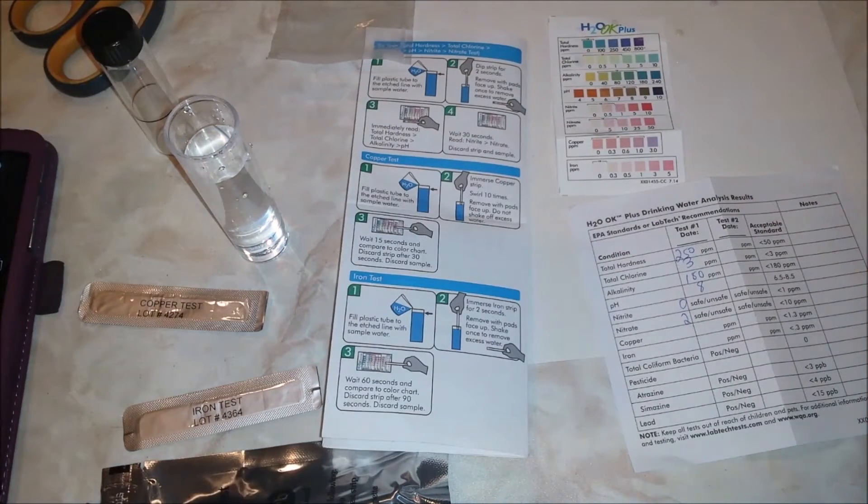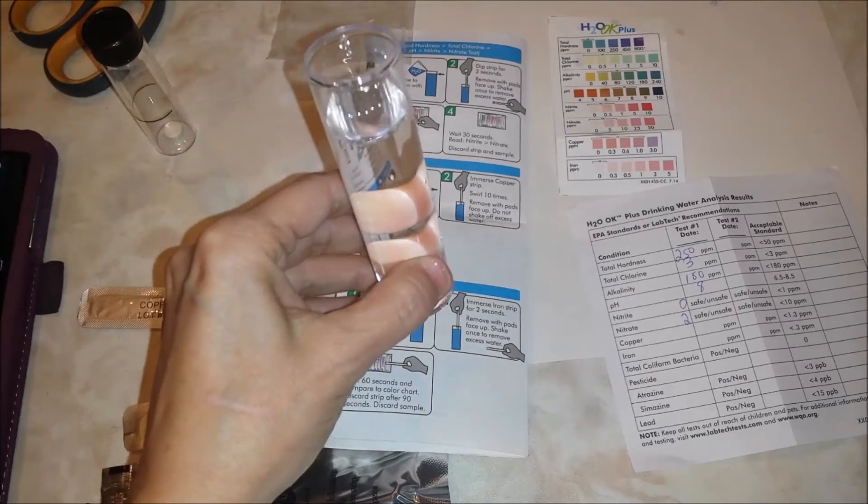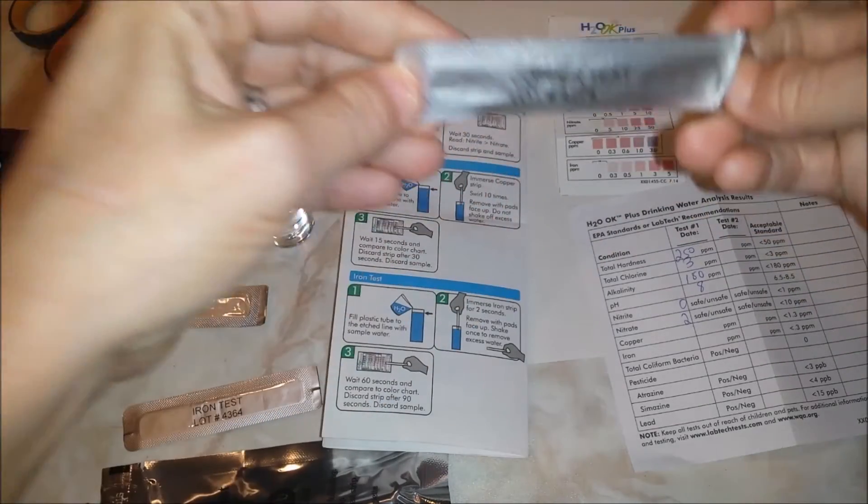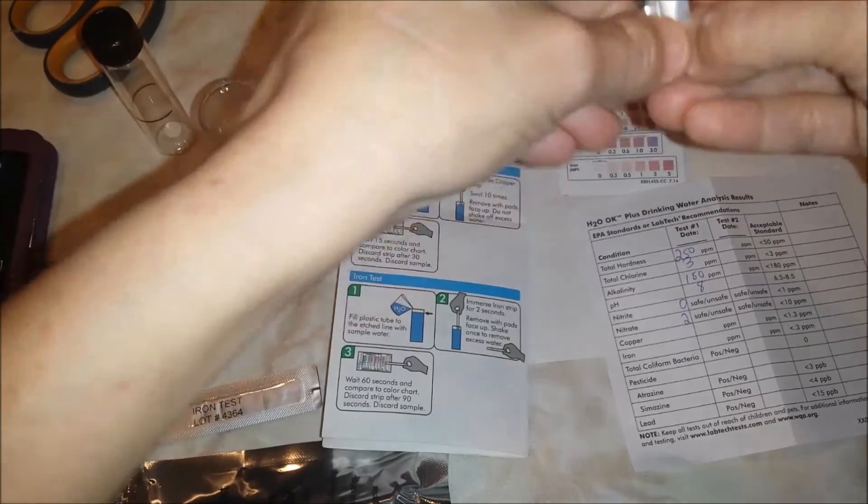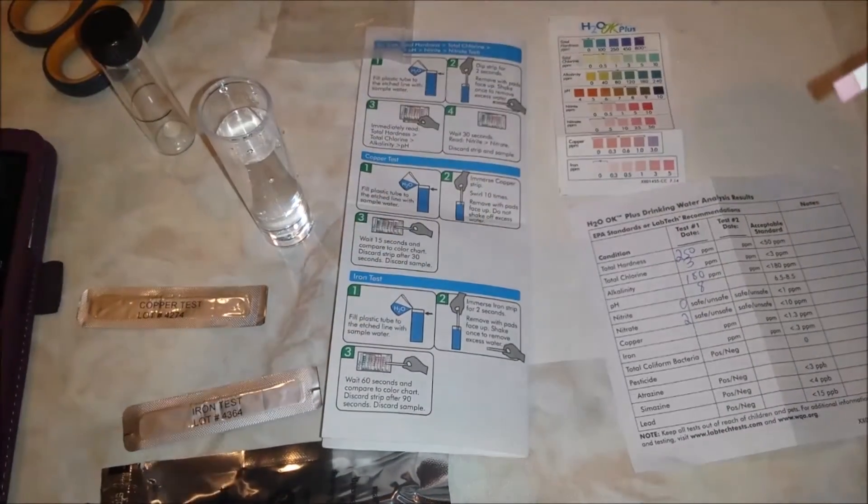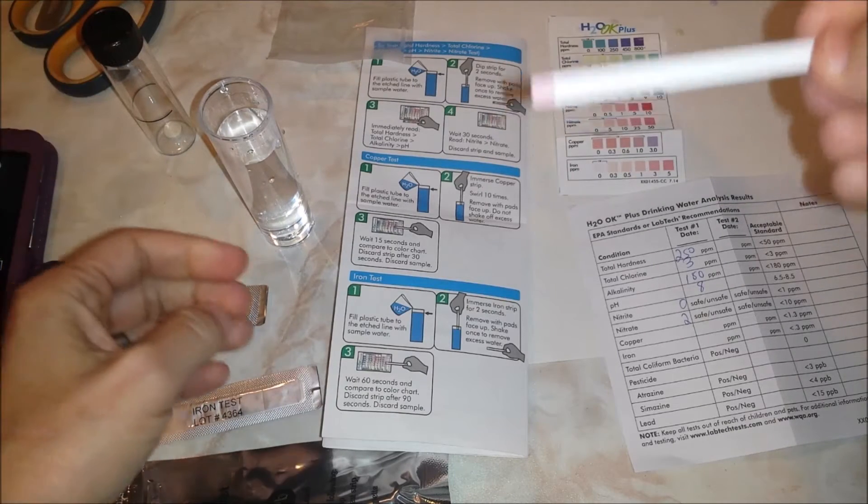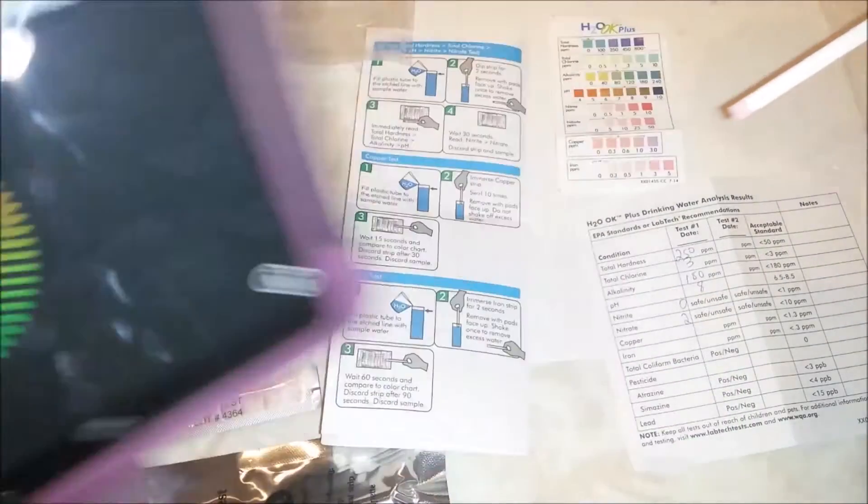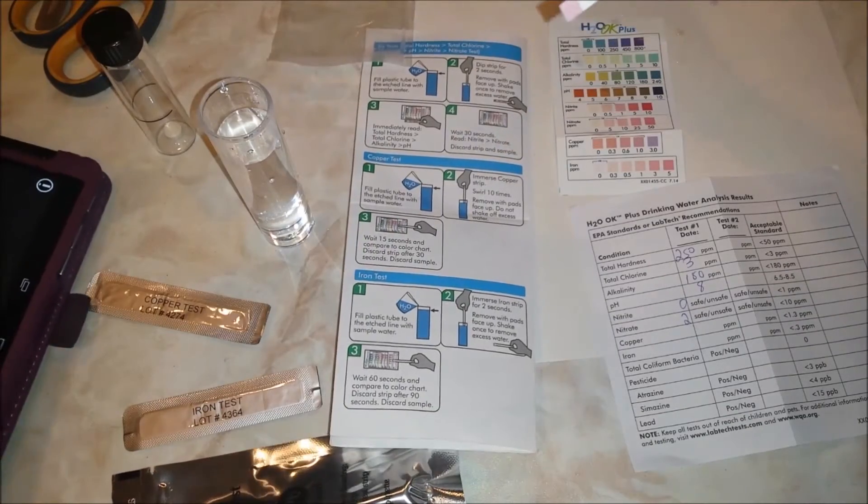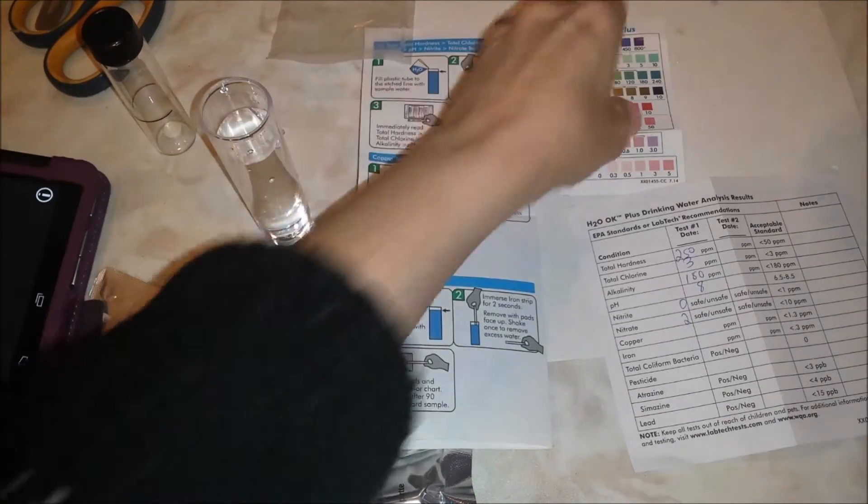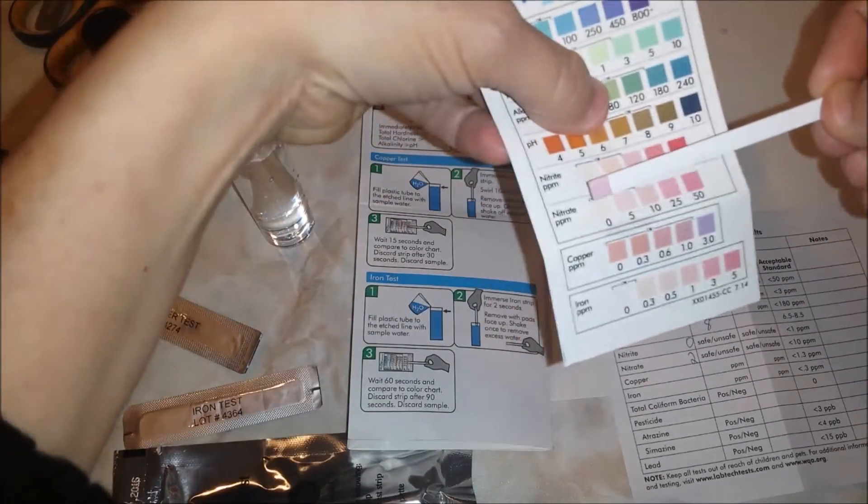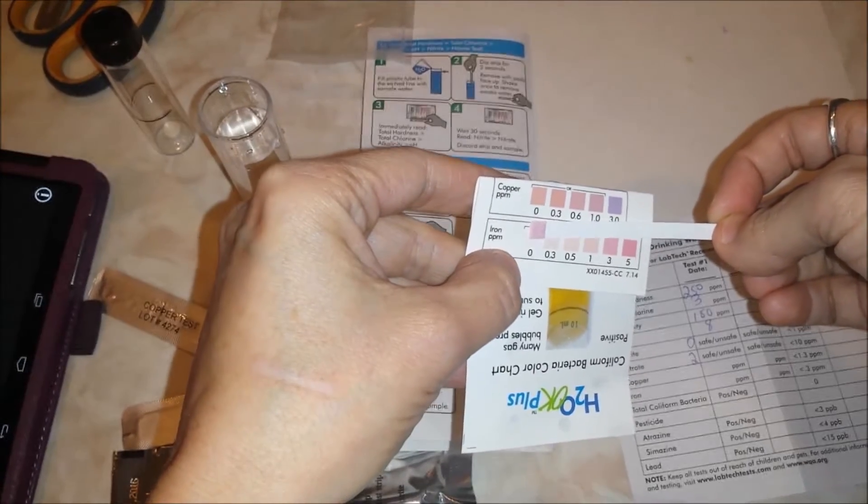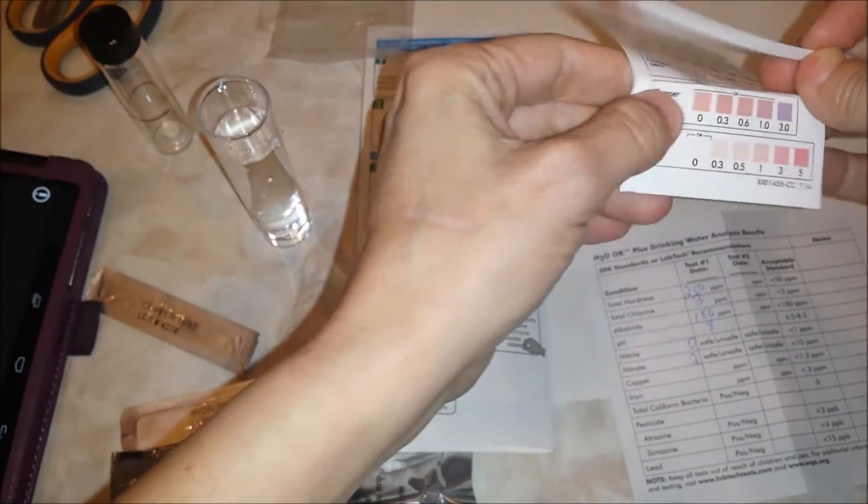We're going to move on to the copper test. You fill up your vial to the etched line. I have fresh water. We're going to open our copper strip. It says copper test. We are to dip it and swirl ten times, remove with the pad up, do not shake off excess water. We're going to count for 15 seconds using our little timer here. Then we're going to read it and discard it. Here's our chart - by default that pretty much matches the lower copper level.